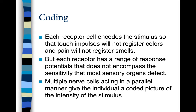Each receptor cell encodes the stimulus so that touch impulses will not register colors and pain will not register smells. Each receptor has a range of response potentials that doesn't encompass the full sensitivity that most sensory organs detect. Multiple nerve cells acting in parallel give the individual a coded picture of the intensity of stimulation.